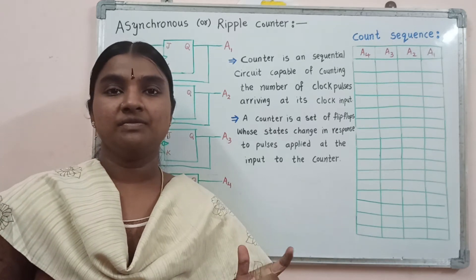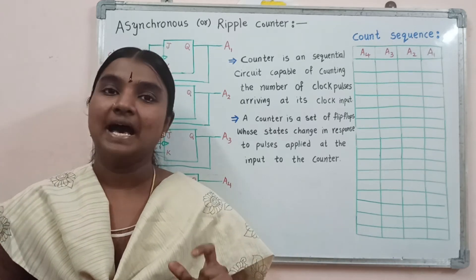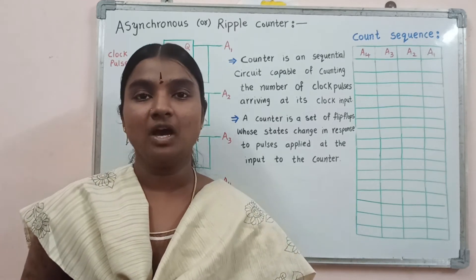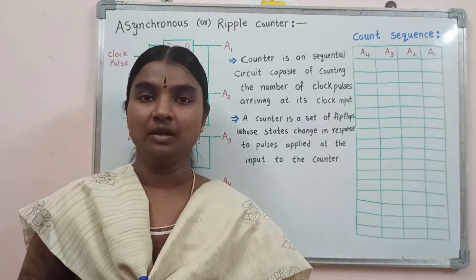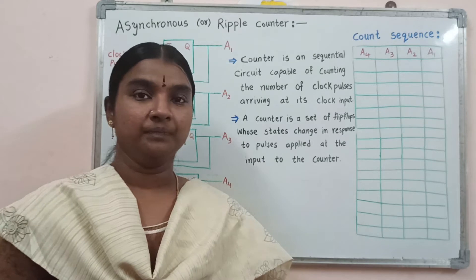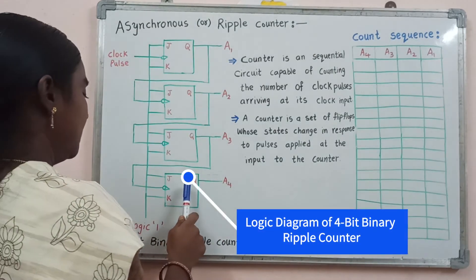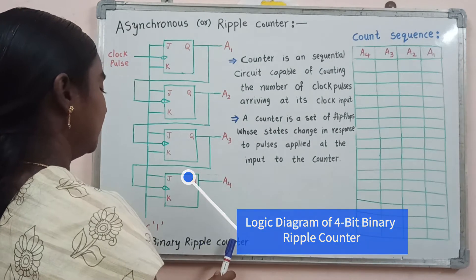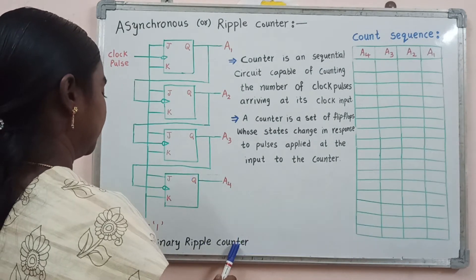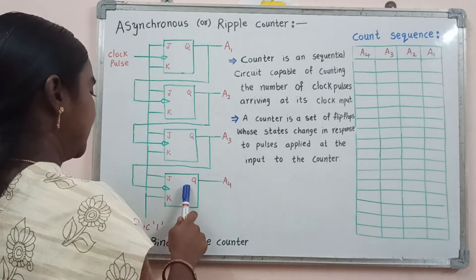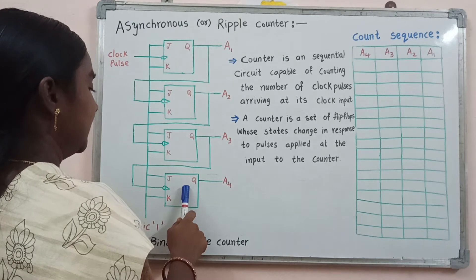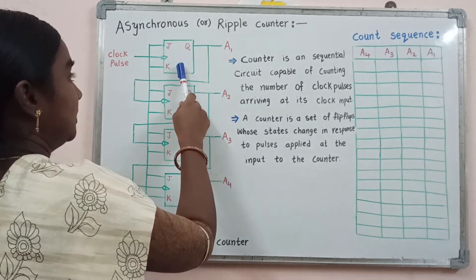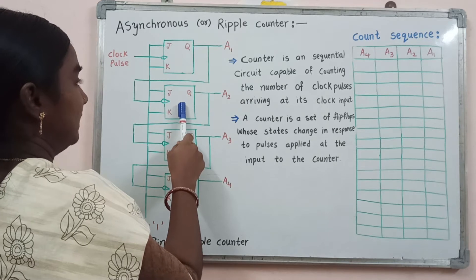First, we will see asynchronous counters. Asynchronous counters we may also call ripple counters. Here, this is the logic diagram of a 4-bit binary ripple counter. This binary ripple counter is a series connection of complementing type flip-flops.